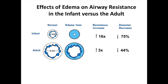This slide shows the effects of edema on airway resistance in the adult versus the infant. With one millimeter of edema in the airway, the child's resistance increases 16 times and the diameter of his airway increases 75%, versus the adult airway which starts out at 8 millimeters, where one millimeter of edema will only increase resistance three times and decrease the diameter 44%.